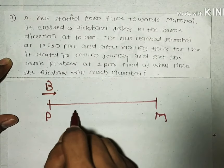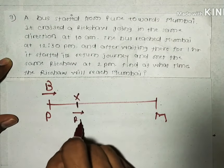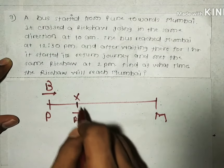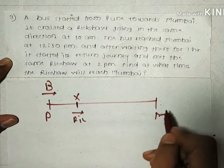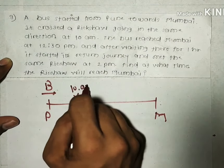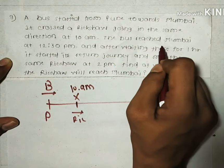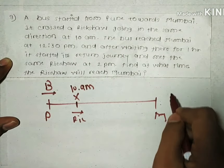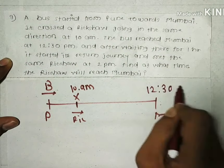Maybe the rickshaw will be here at this point. The rickshaw is going towards Mumbai; the bus crossed that rickshaw going in the same direction at 10am. The bus reached Mumbai at 12:30pm.